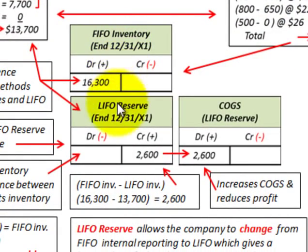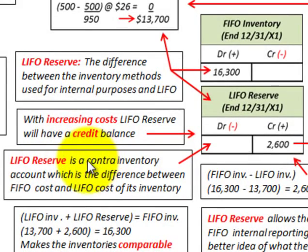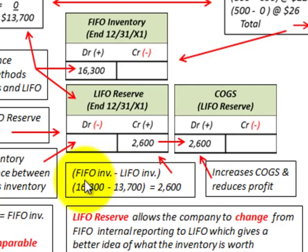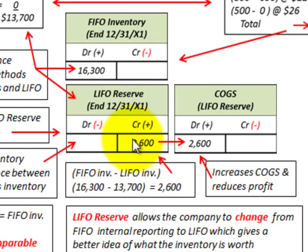Now we want to set up this LIFO reserve account against our FIFO inventory — this is where we can relate between our FIFO and LIFO inventory. The LIFO reserve is a contra inventory account, which is the difference between the FIFO cost and the LIFO cost of the inventory. Our FIFO ending inventory was $16,300 and the LIFO inventory was $13,700, so subtracting gives us $2,600 — and that's what we'd put into this LIFO reserve account as a credit.